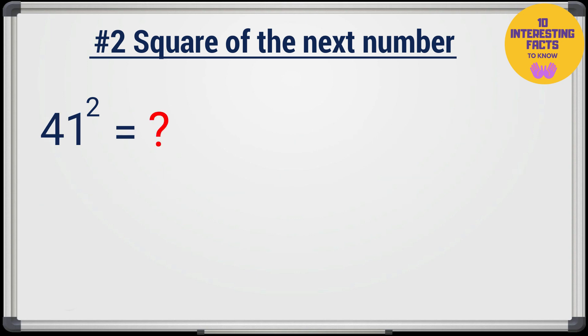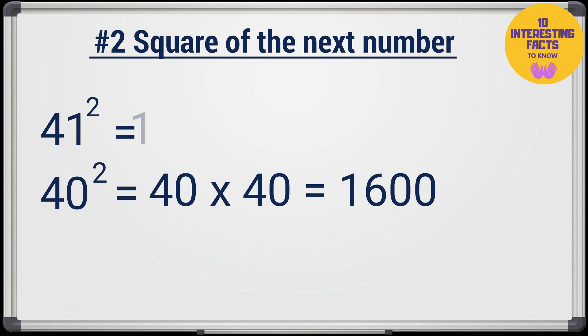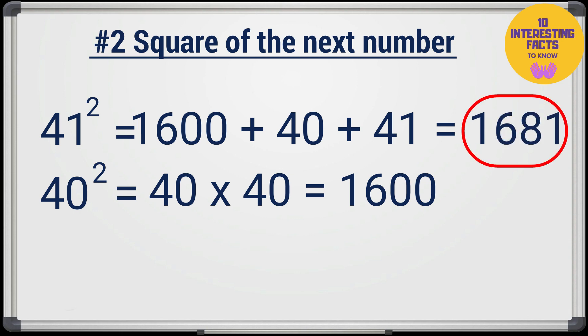So what will be the square of 41? It will be 40 square plus 40 plus 41 which is 1681. Amazing, isn't it?